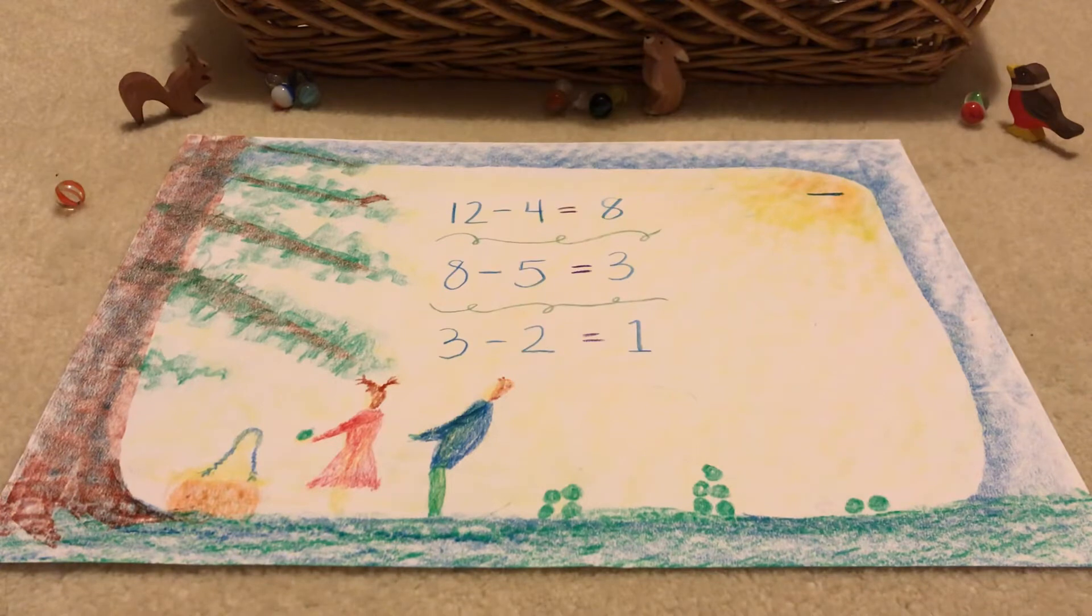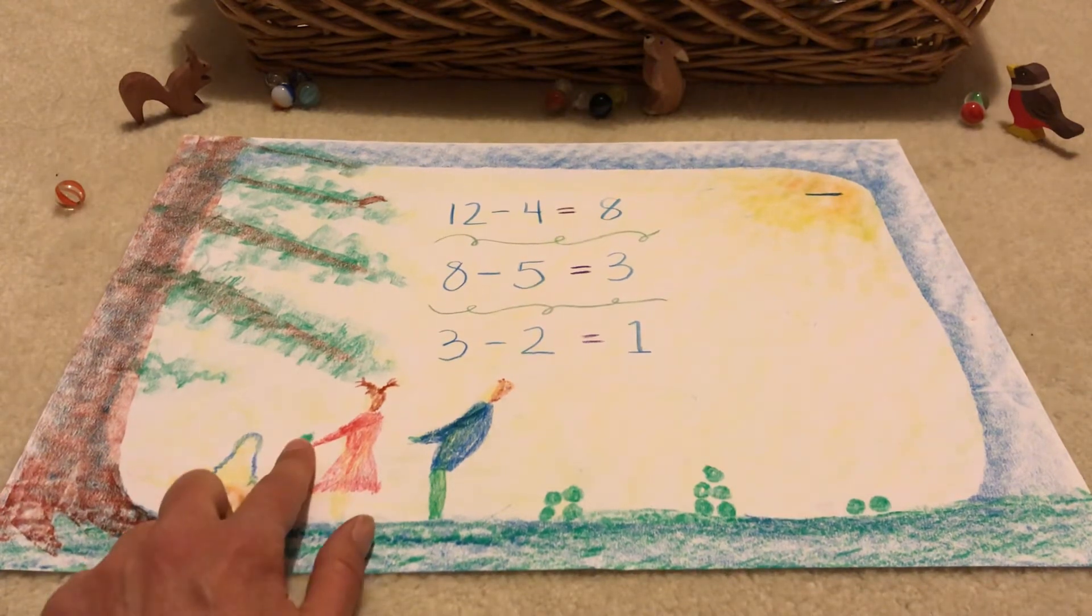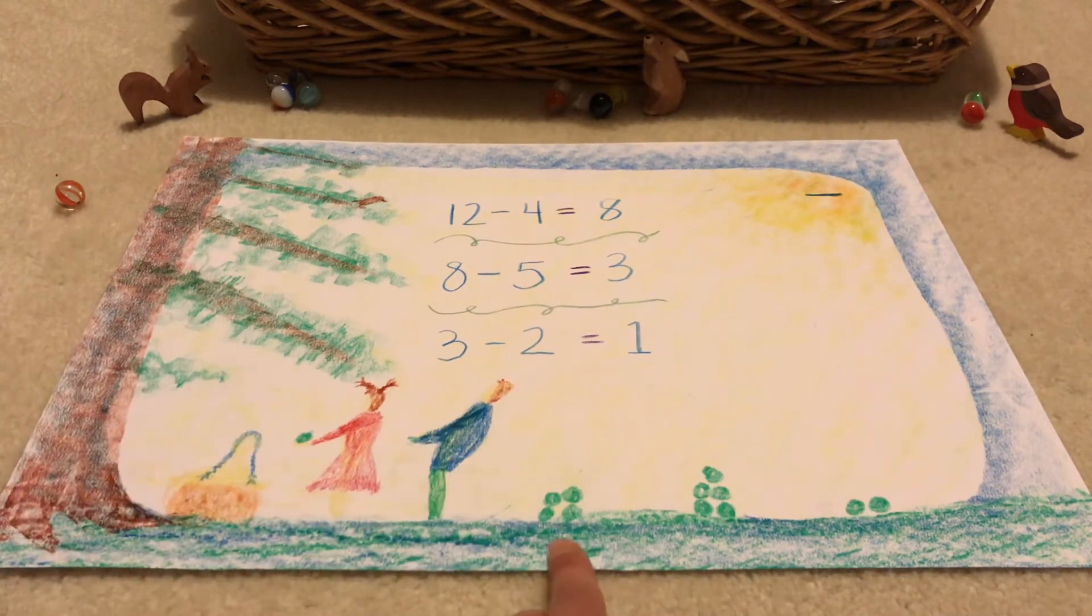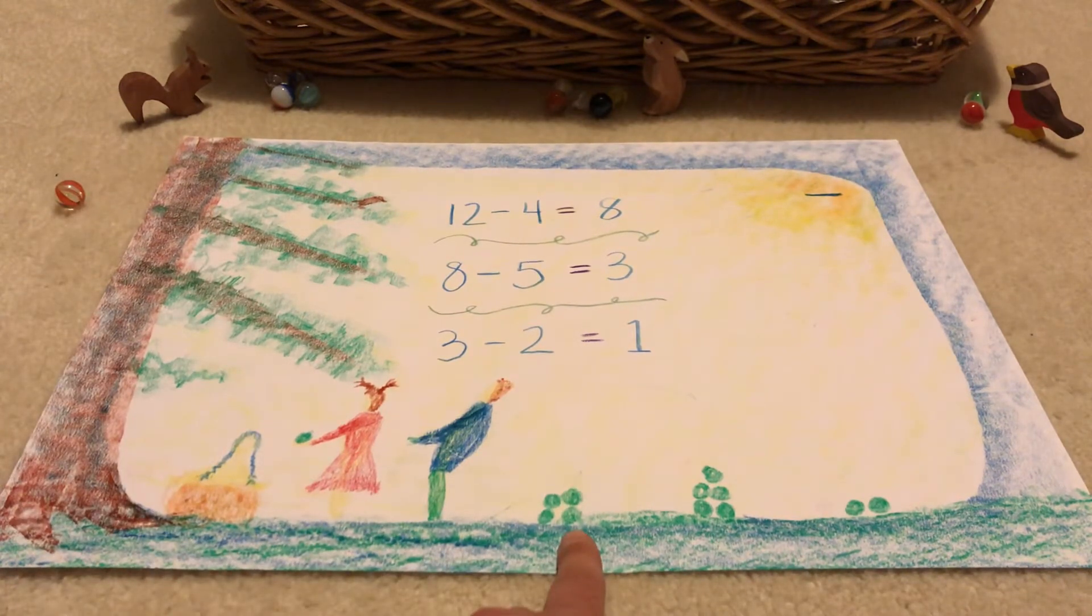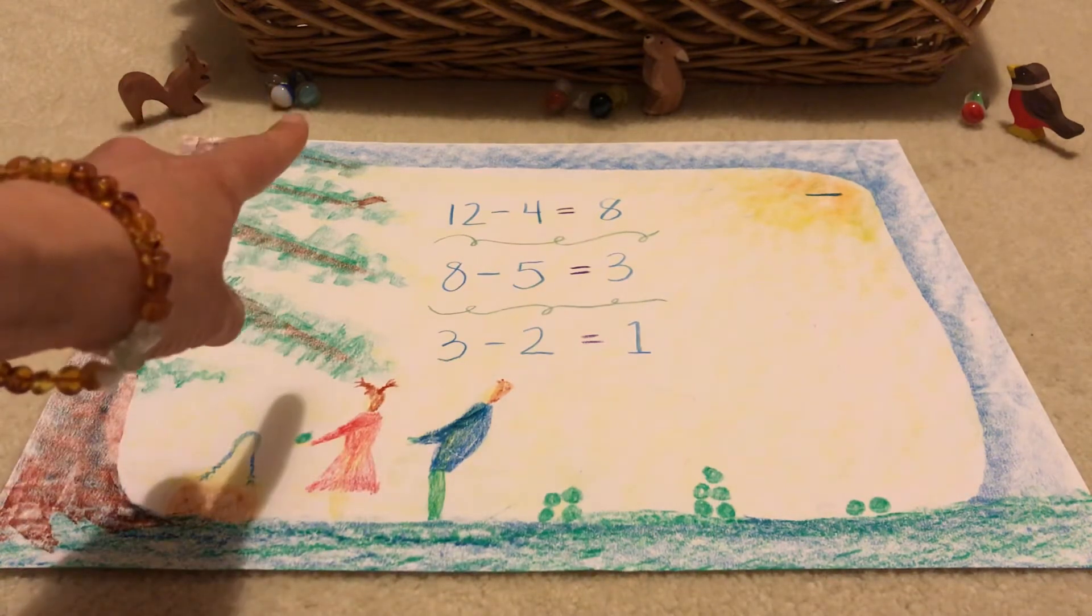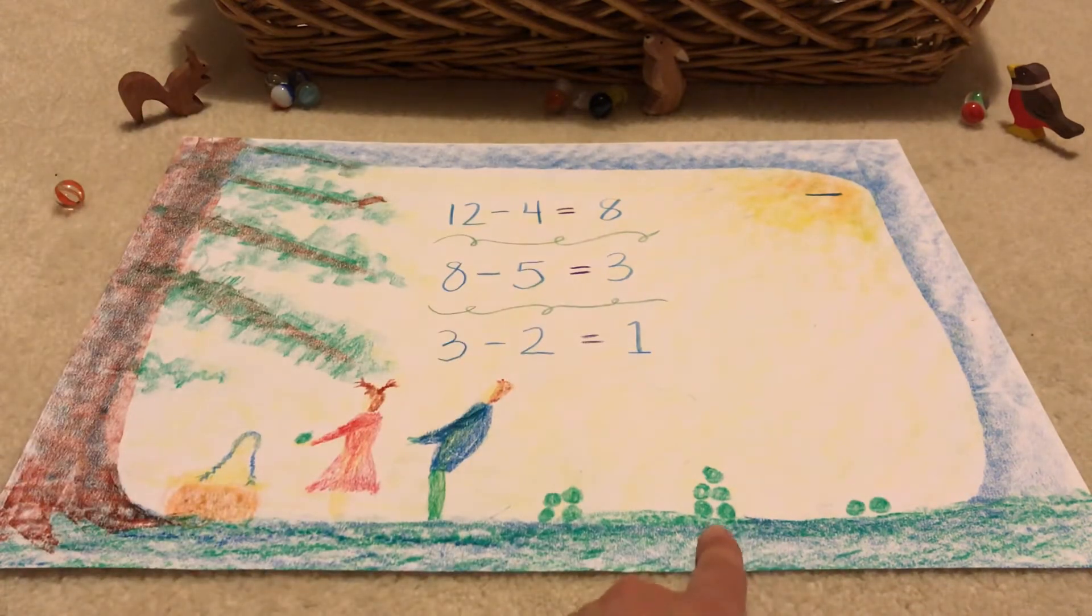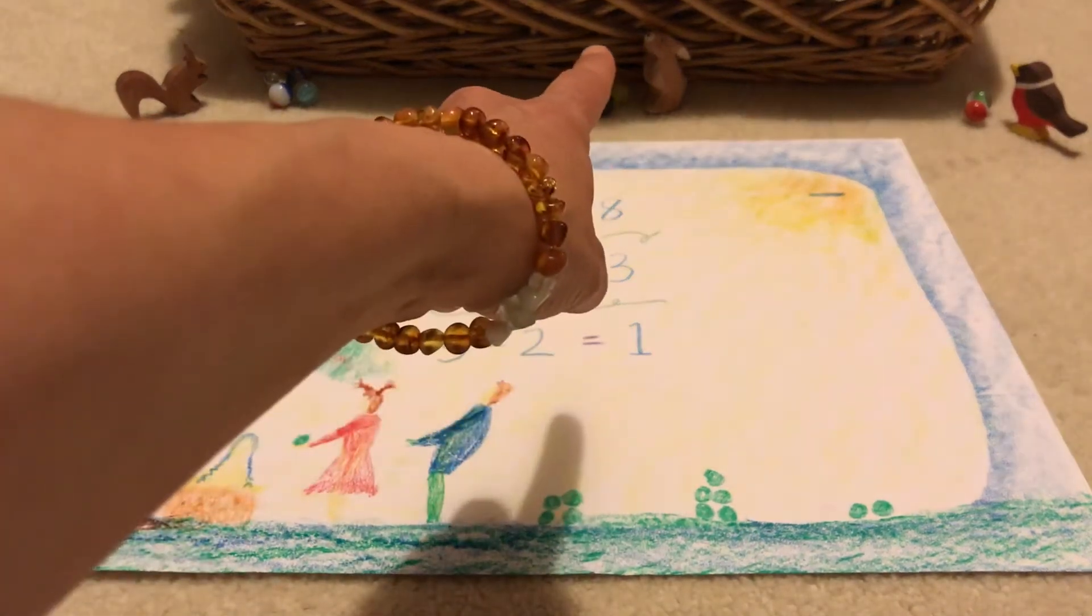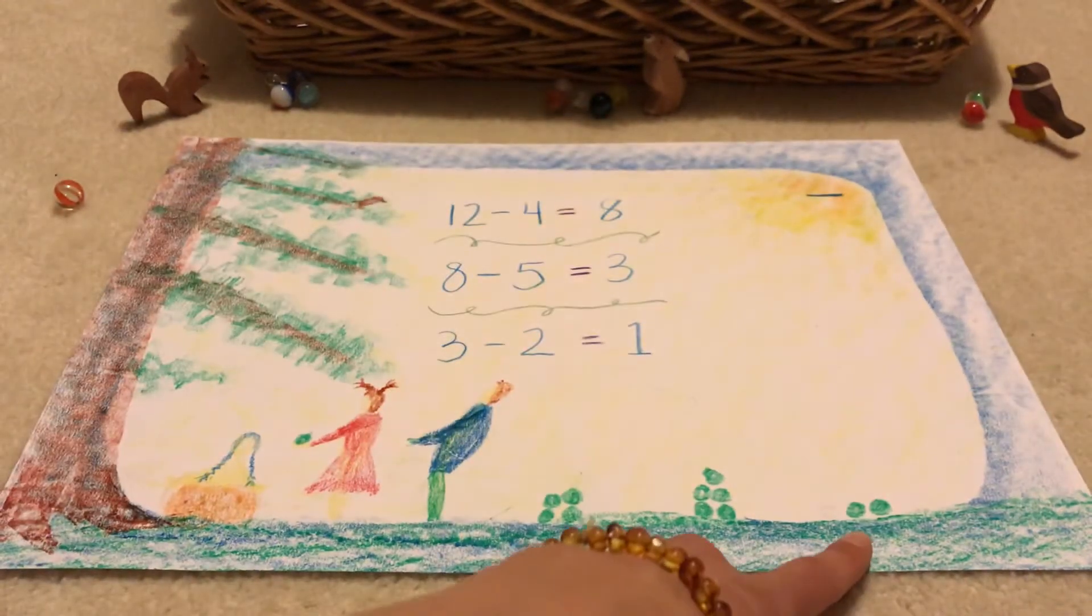So the movie turned off, so this is the second part. Now we've got one fruit here for Grandmother Earth, four fruits here just like the squirrel family, five fruits here just like the bunny family, and two fruits here just like the birdie family.